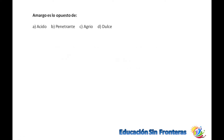La primera pregunta dice: amargo es opuesto a ácido, penetrante, agrio, dulce. Lo dulce y lo amargo son palabras antónimas, totalmente opuestas. Entonces vamos a marcar dulce.